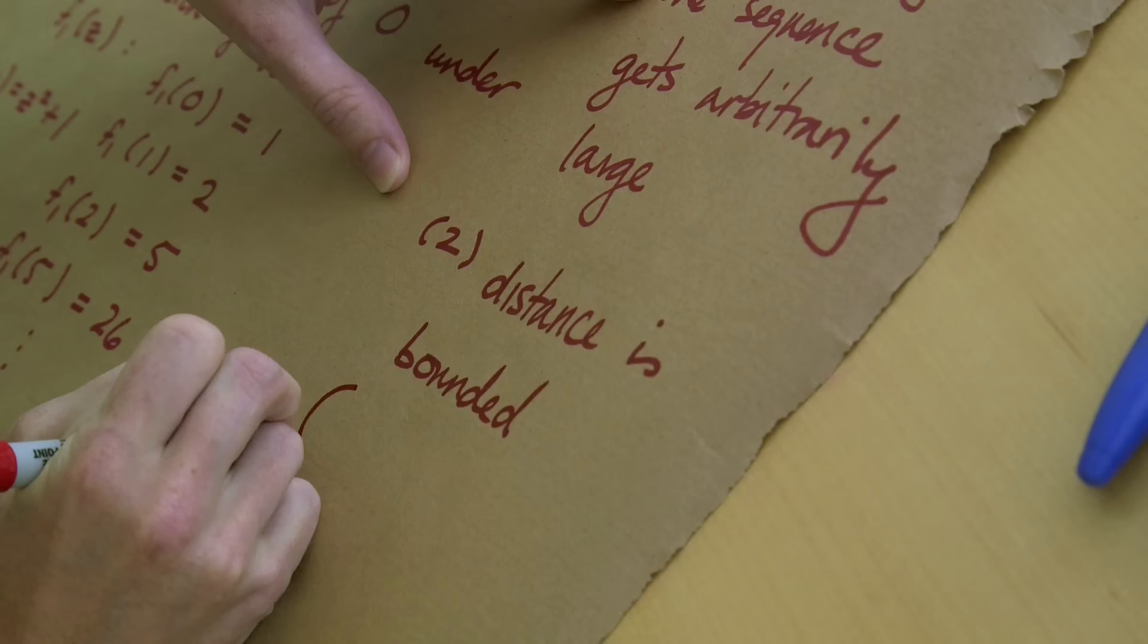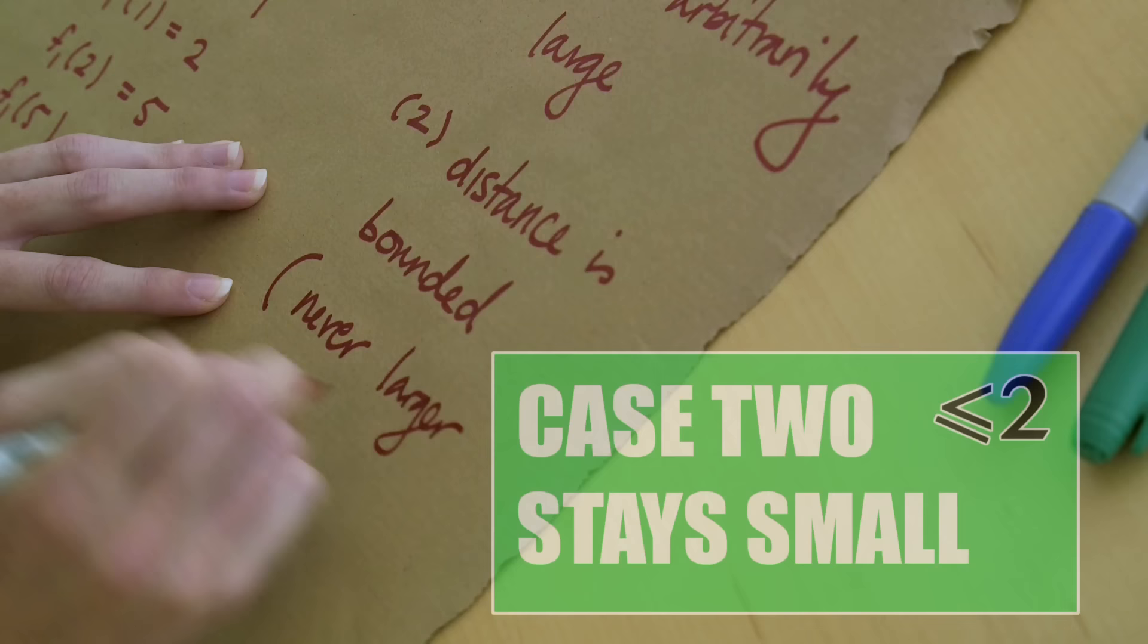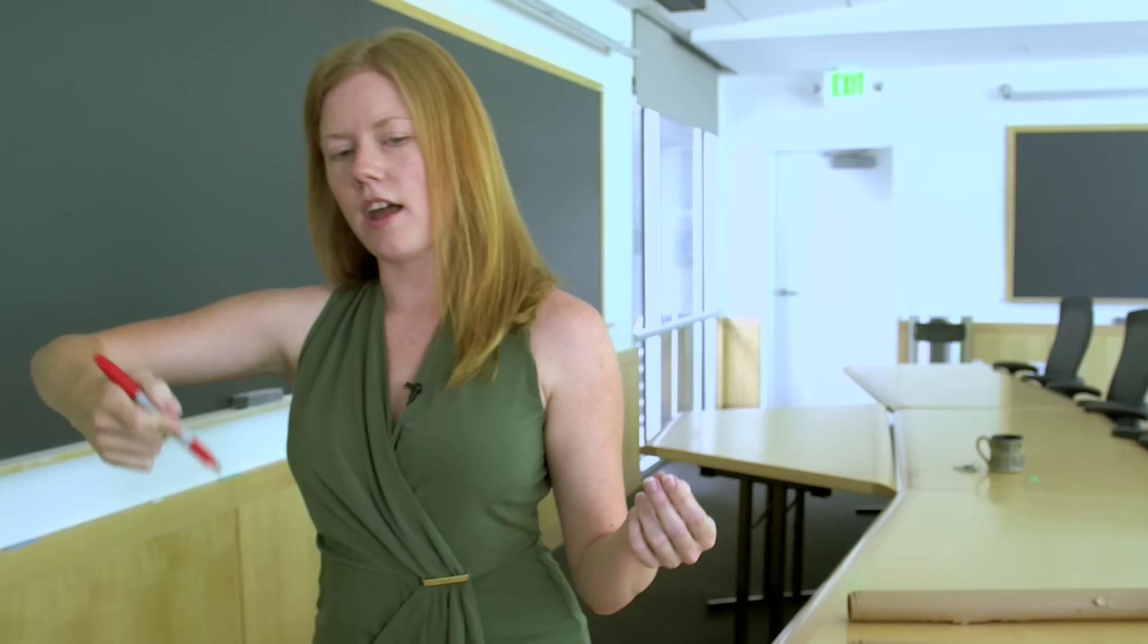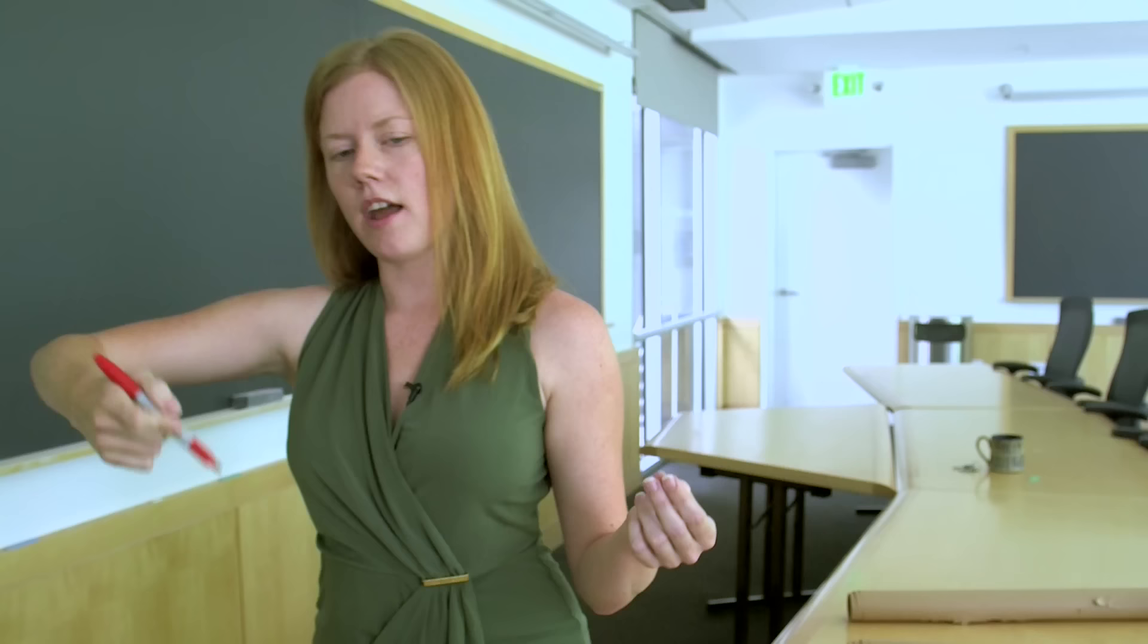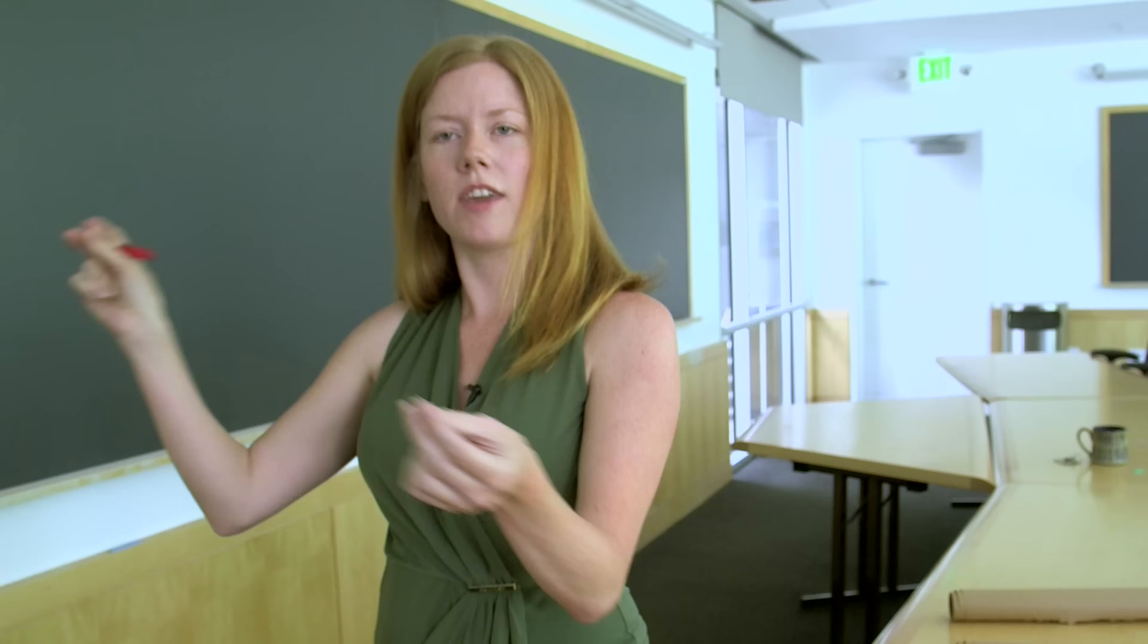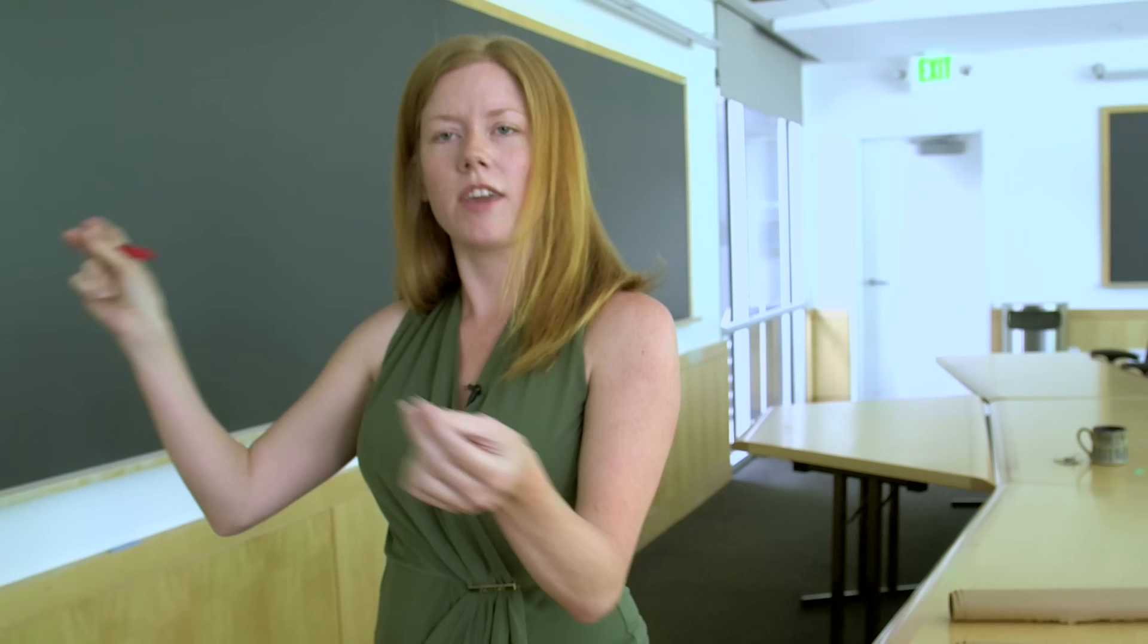The other thing that can happen is that the distance is bounded, the size is bounded. In fact you can say that it never gets larger than two. You have this dichotomy where only one of two things can happen. If you give me a complex number C and I start iterating zero under that function z squared plus C, either the distance of the iterates to zero in this complex plane gets really large and you can't bounce back and forth, or it stays close to zero within two of zero.